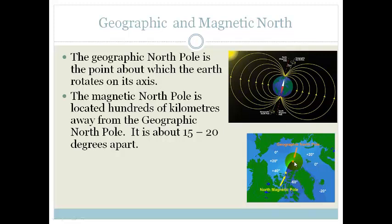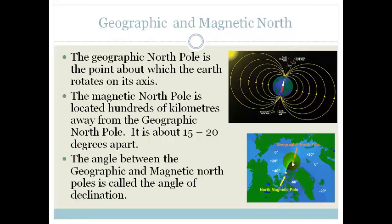So if you look over here on this little map, you can see that here is the geographic north pole, and this is the magnetic north pole, and this angle between them is called the angle of declination. And if you've done geography already, you'll have learned a little bit about that already.